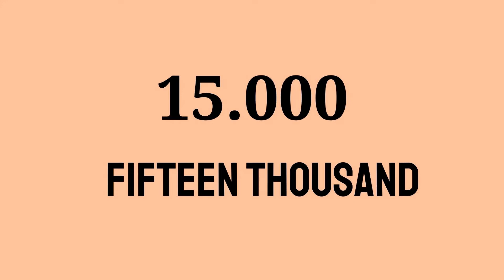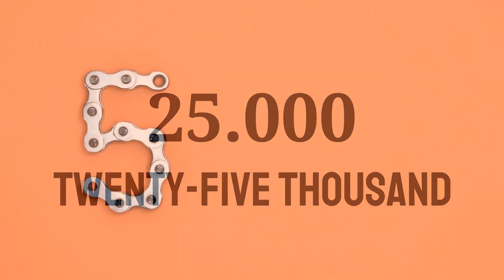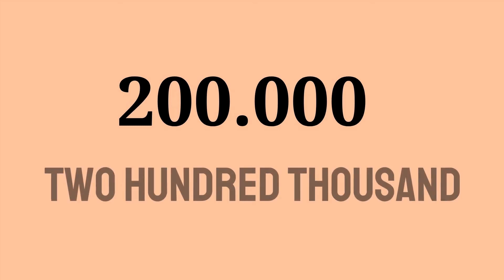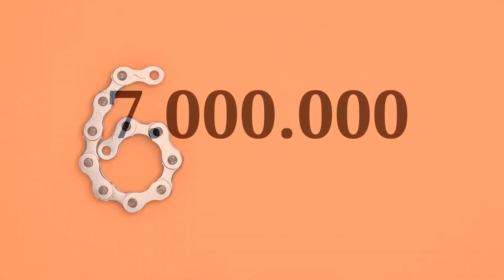The next number is twenty-five thousand. Let's go to a bigger number — a lot of zeros here. We know this is a thousand and we have more zeros here, this is a hundred, two hundred, so two hundred thousand.